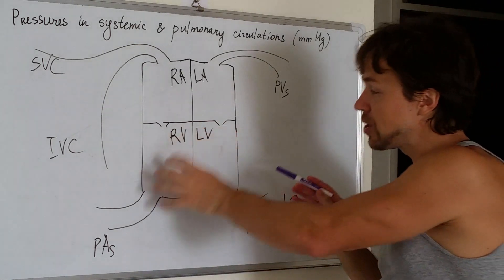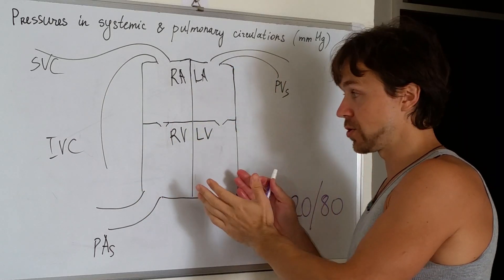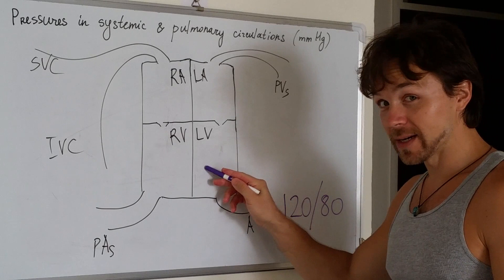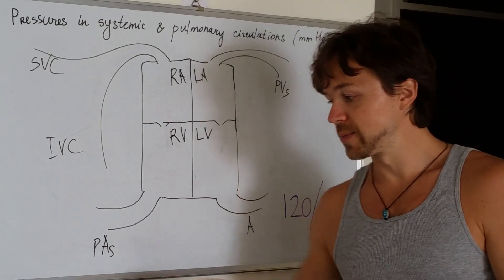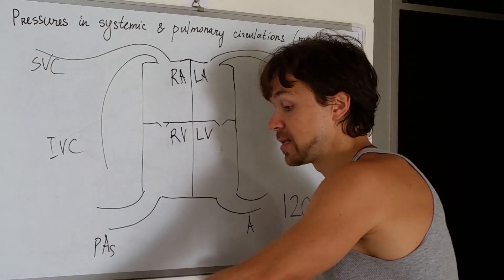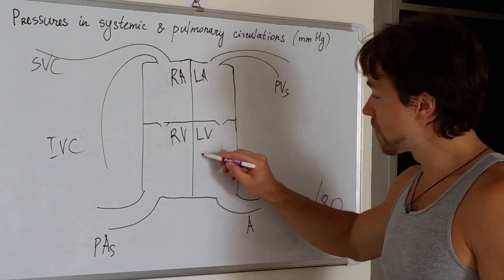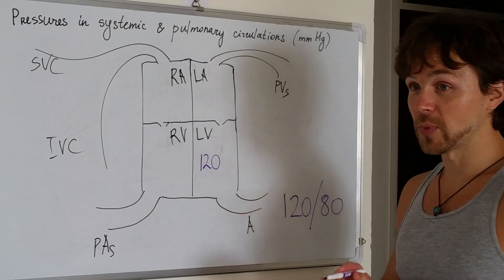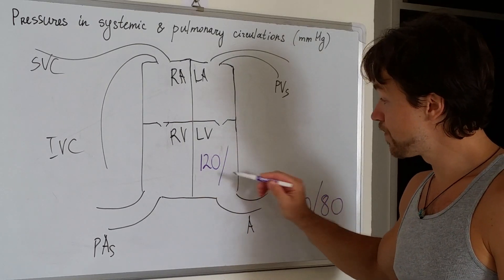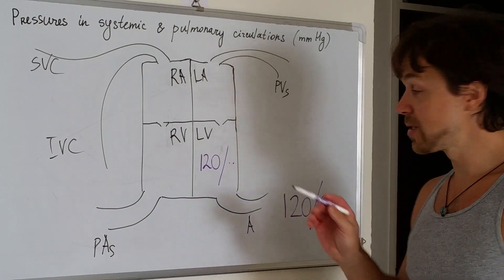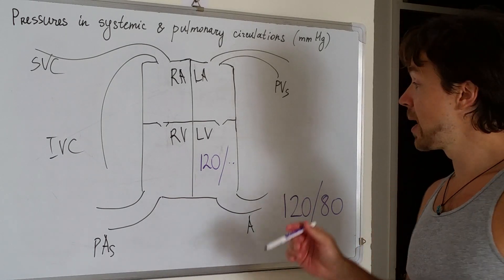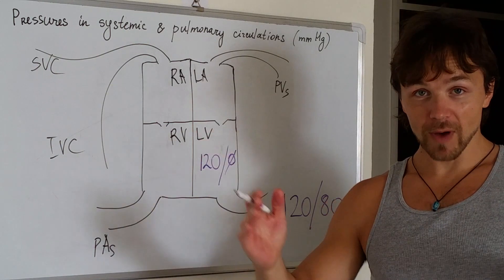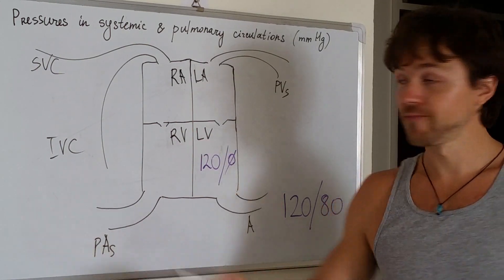Now we'll get into each compartment and identify those pressures to build the connection so you'll be able to memorize them. A common mistake is thinking the left ventricle pressure equals systemic blood pressure. The first part is correct — systolic pressure in the left ventricle is normally equal to the systemic blood pressure. However, diastolic pressure in the ventricle is not equal to diastolic pressure in the circulation. That pressure is normally equal to zero — during diastole all the valves are shut, no blood is coming in, so the pressure is zero.